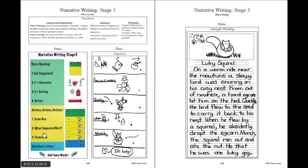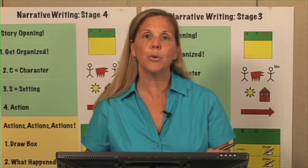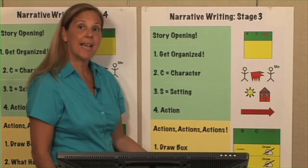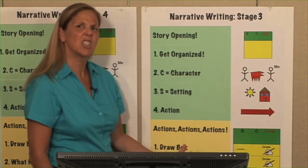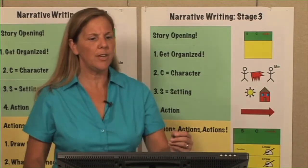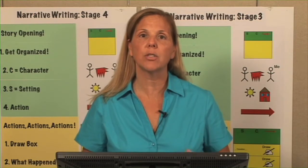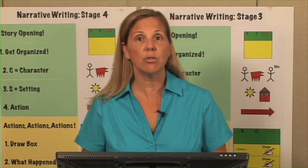Let's look at what else we have on this page. You have the steps — the student-friendly chart that you can post as you go through each step. Notice behind me I have that same exact chart so you can see what it looks like in size. The major thing you want to look at are the colors. The green is for the story opening, the yellow is for the actions, actions, actions in the story, and the blue is the story closing. So you have the three parts of the story and visually students can see those steps.